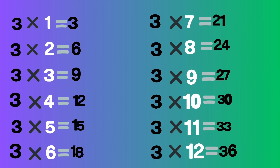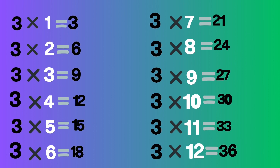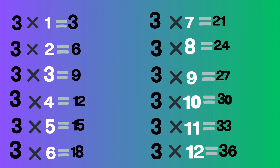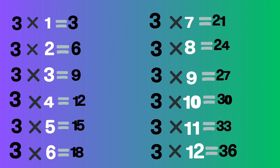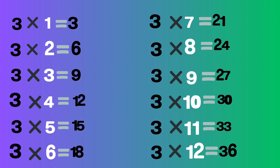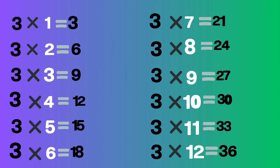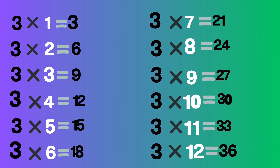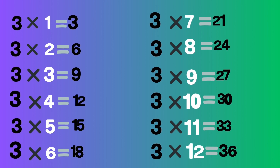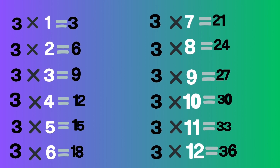Three ones are three, three twos are six, three threes are nine, three fours are twelve, three fives are fifteen, three sixes are eighteen, three sevens are twenty-one.